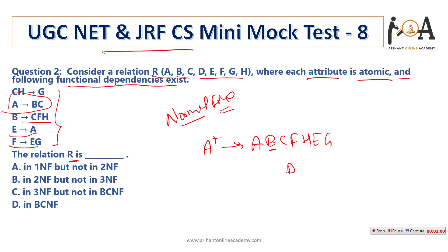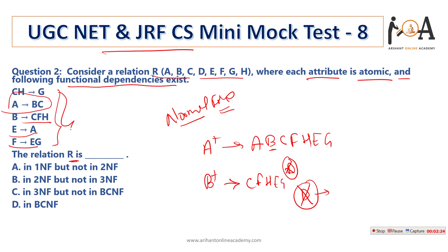But if you observe, D is missing. D is missing here. So I need to conclude that for the B-closure as well — B-closure can also derive C, F, H. F can derive E and G, so E and G can be added. But ultimately D is still missing. D cannot be derived from any element, because D doesn't exist in the relation.